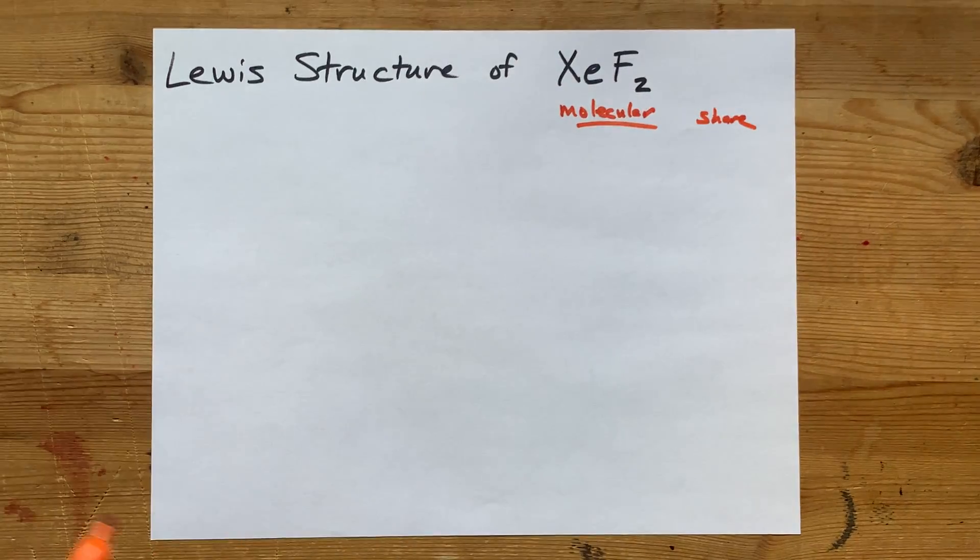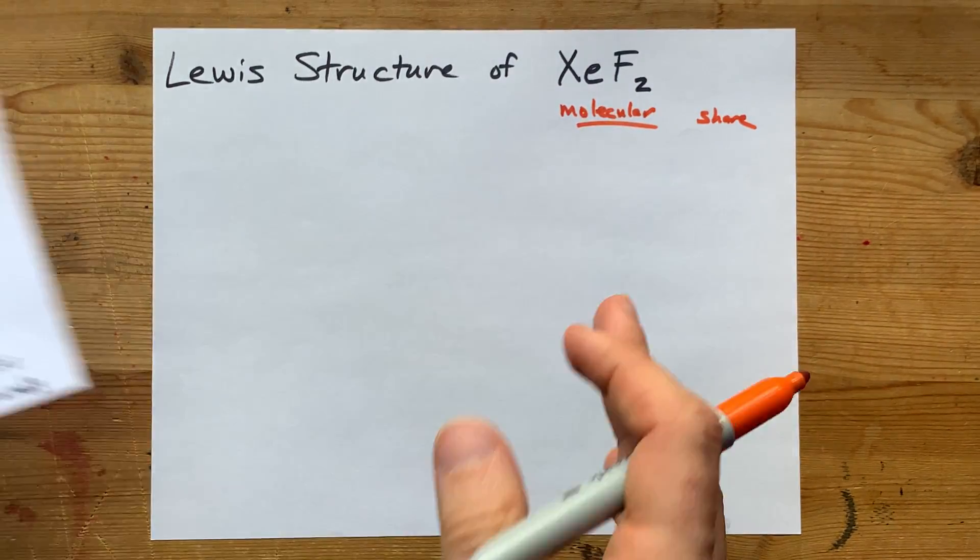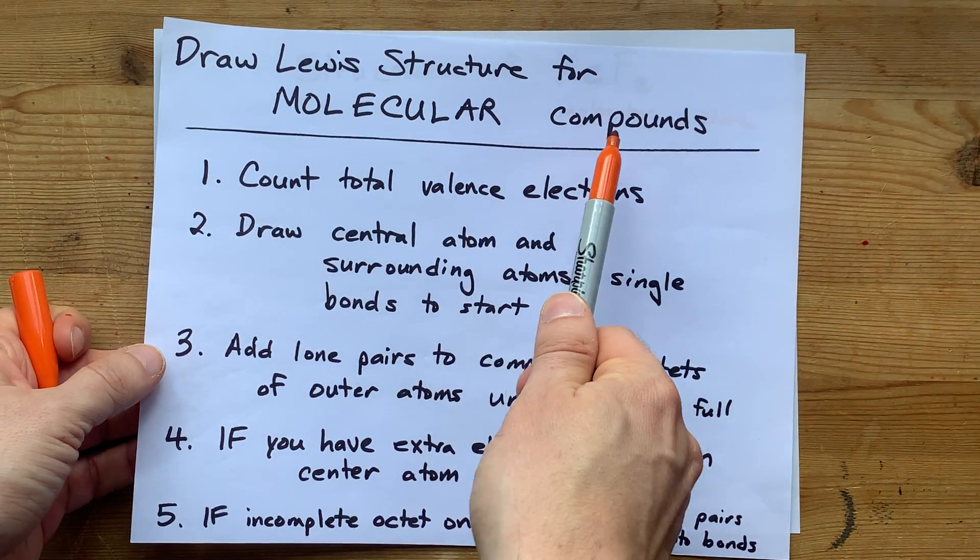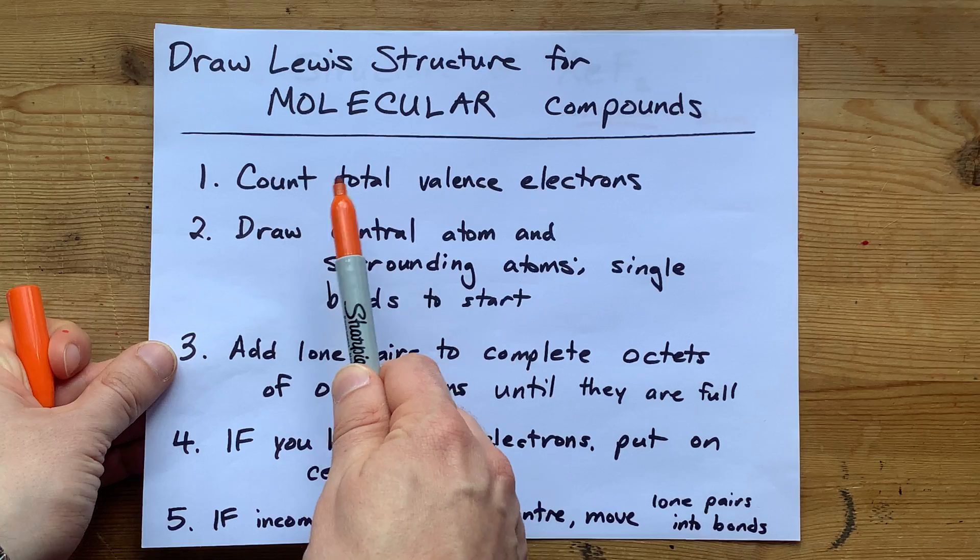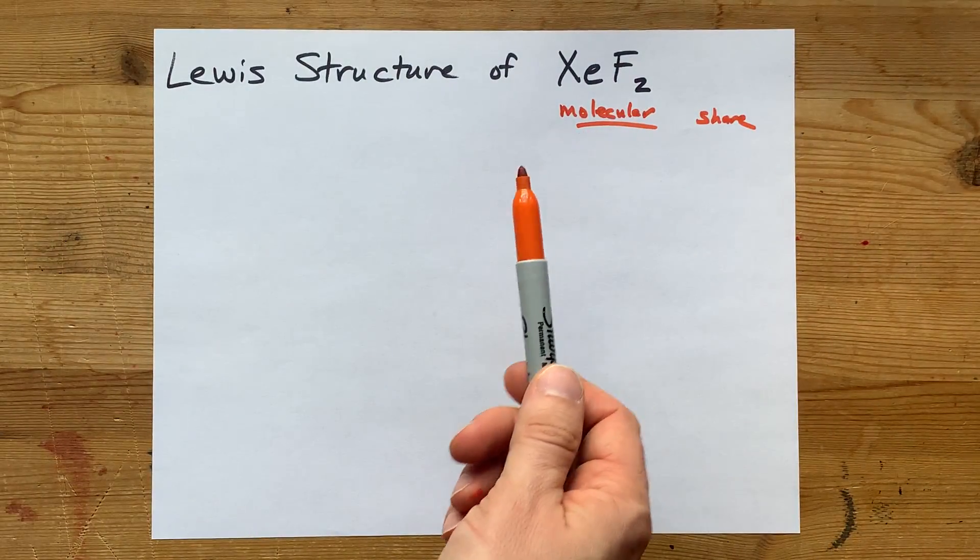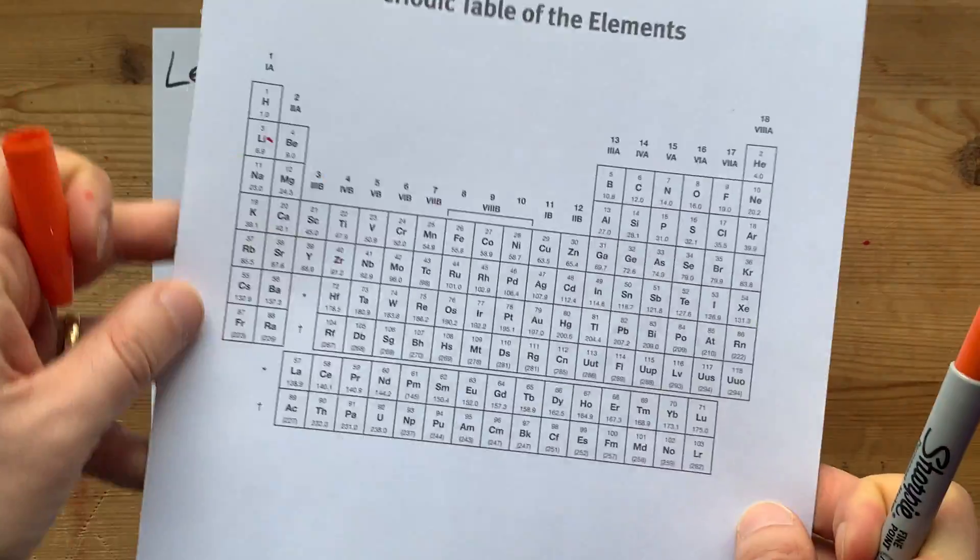They come from the upper right-hand portion of the periodic table, on this side of the staircase that's written on better periodic tables than this. And when non-metals bond together, they form molecular compounds. That means they're going to be sharing electrons. It's not a transfer from one to another.